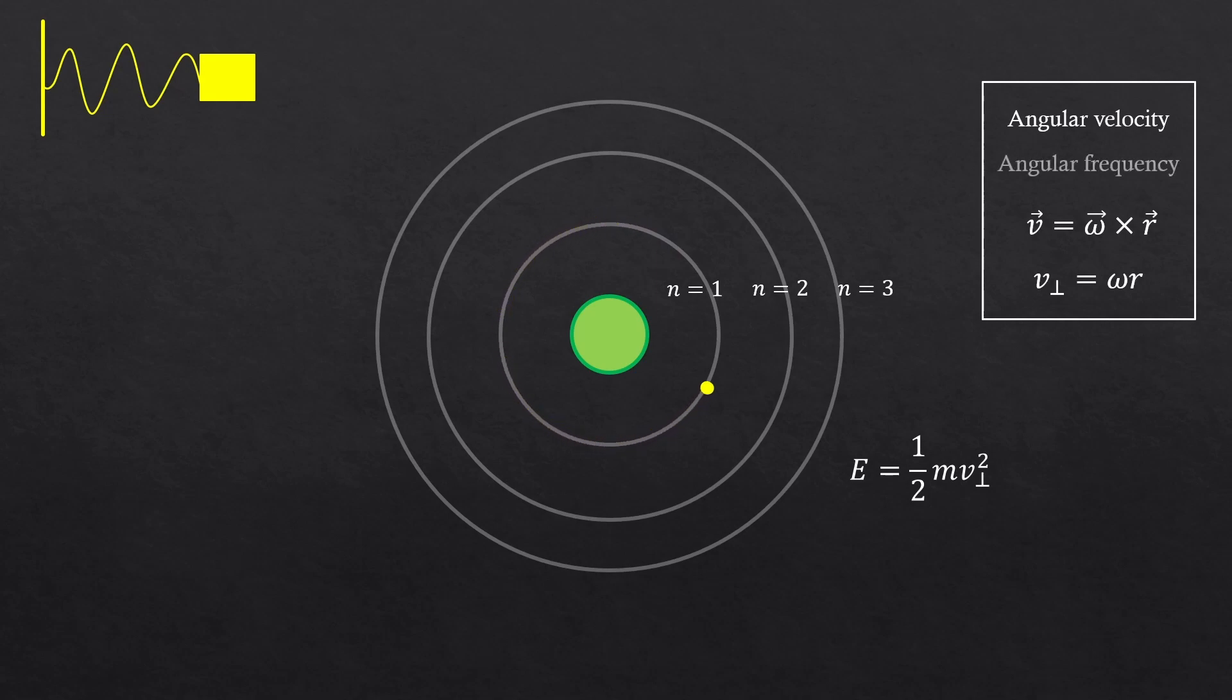By the way, if you guys didn't know, angular velocity and angular frequency are the same thing. You can call it either way. So our energy could be expressed as half m omega squared r squared.